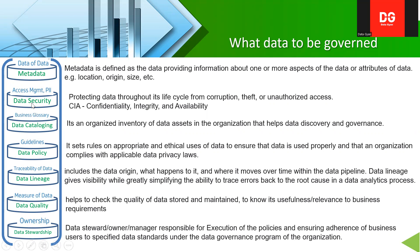The next type is data security, which is a very critical component also referred to as CIA — confidentiality, integrity, and availability. It involves protecting data throughout its lifecycle from corruption, theft, or unauthorized access until it is disposed of. This is why we need to govern access management and PII data, whether it belongs to employees or customers.